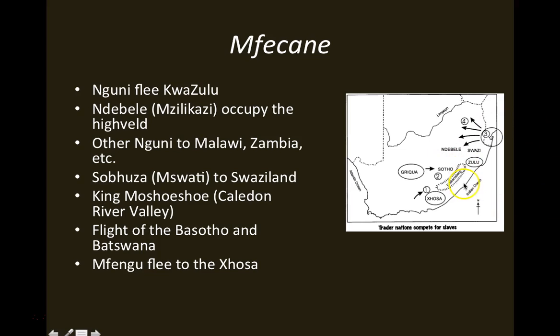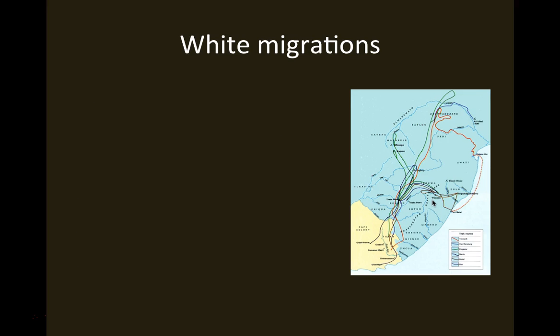Another Nguni group, the Mfengu, defeated by the Zulu, fled to the Xhosa and joined together with them — giving a sense of the fluidity of ethnic identities in this period. These are just a few of the groups involved in this massive sequence of events.